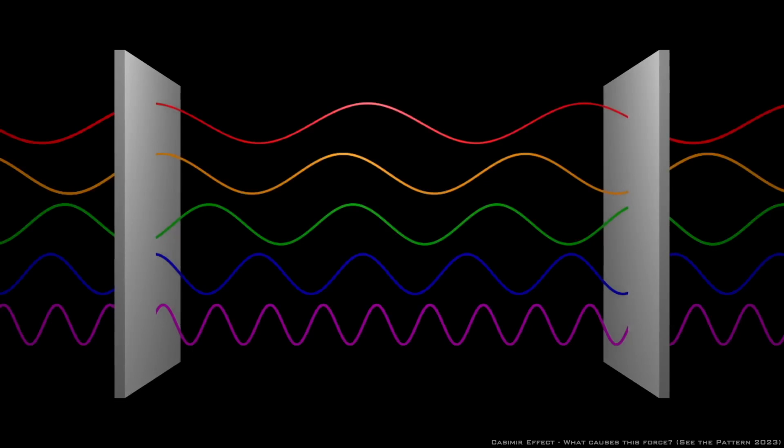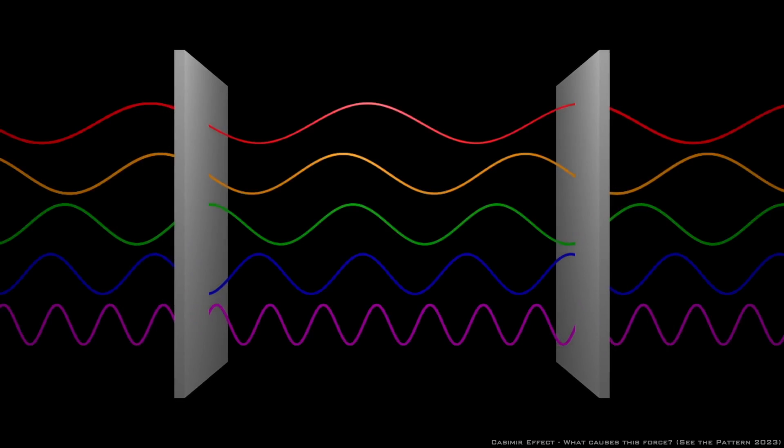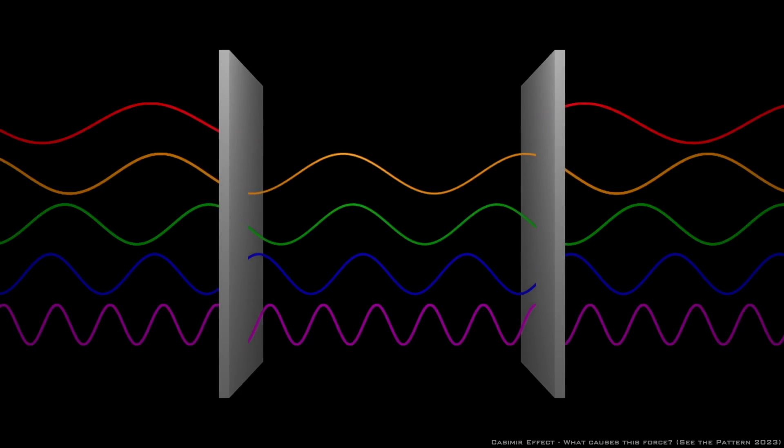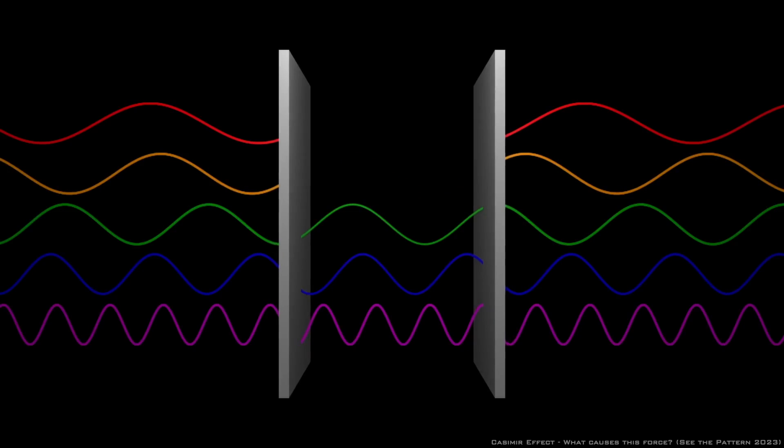First is the Casimir effect, discovered by Dutch physicist Hendrik Casimir. Imagine placing two flat metal plates extremely close to each other in a vacuum. The plates restrict the wavelengths of virtual particles that can survive between them due to the confined space.